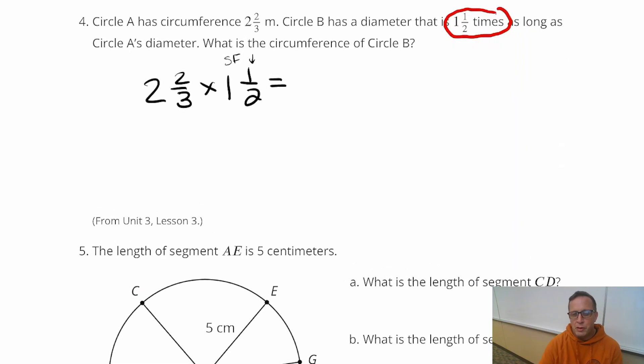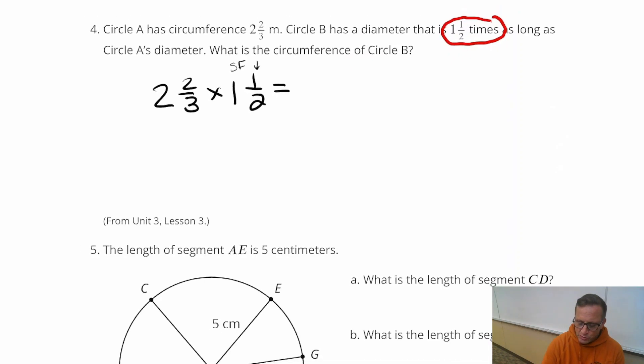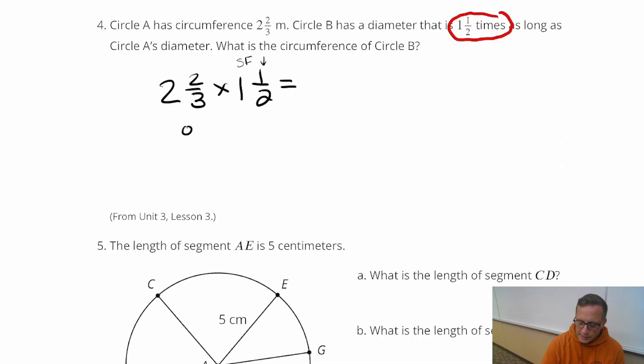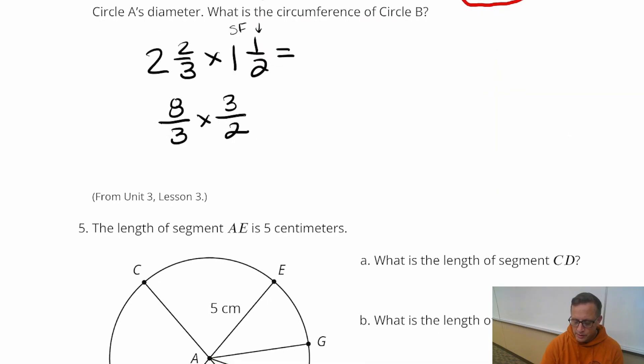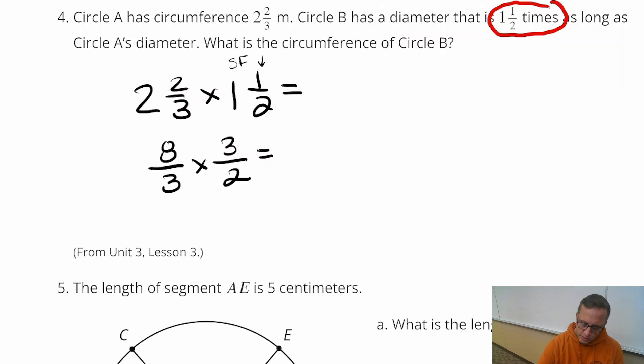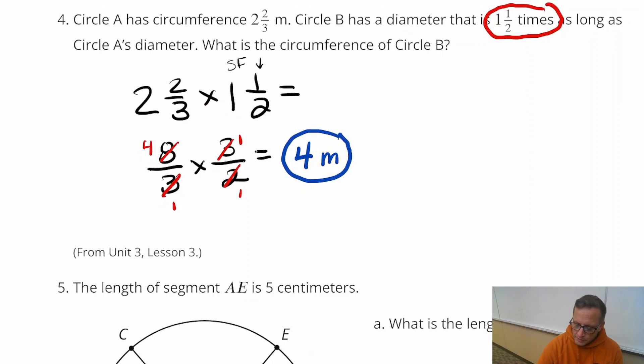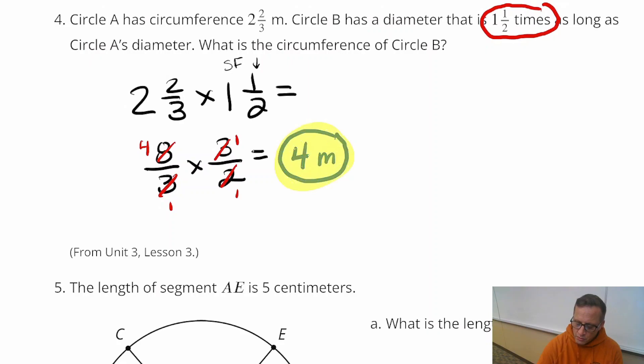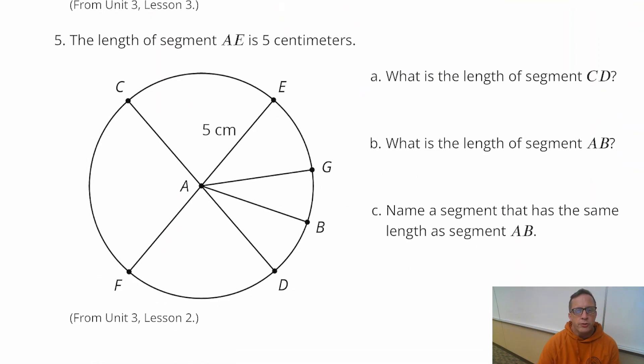So now if you remember mixed numbers, mixed numbers are done by changing them to improper. So 2 and 2 thirds is, that's going to be 8 thirds. And then 1 and 1 half is going to be 3 halves. Now I could cross-cancel. The 3s cross-cancel. The 8 and the 2 cross-cancel, because you can divide by 2. So you've got 4 and 1 right there. That's pretty easy. So that's 4 meters.